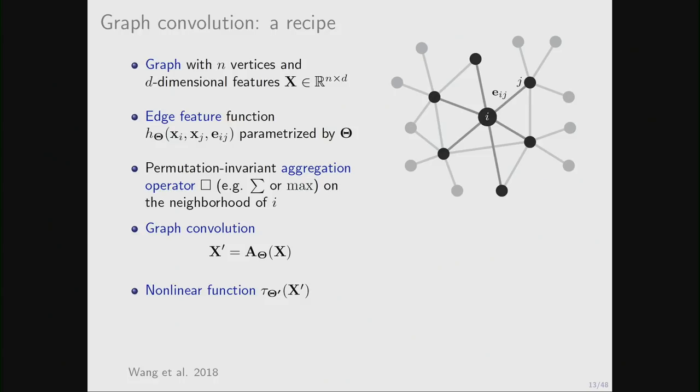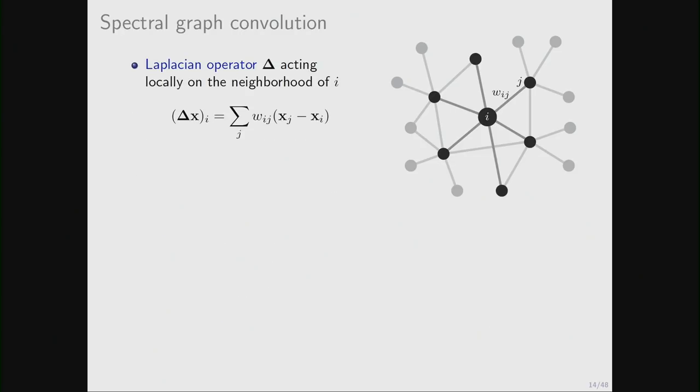We can concatenate these operations several times. So we can, for example, write it in terms of some function that is parameterized by another set of parameters that is applied to these features. And basically, what we get is some kind of local learnable nonlinear operator. So an example of such operator, probably everybody is familiar here, is the Laplacian operator, graph Laplacian operator. So what Laplacian does, it averages in some maybe weighted way, the features in the neighborhood vertices, and then subtracts the value of the feature at the central vertex itself, and does it for every location in the graph.